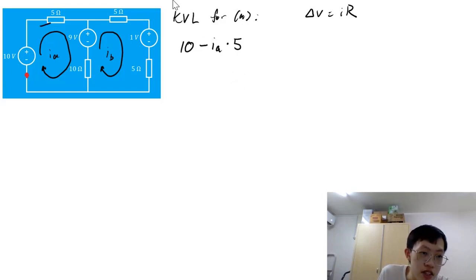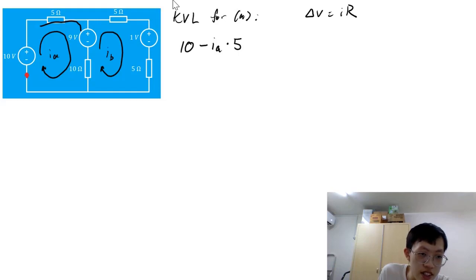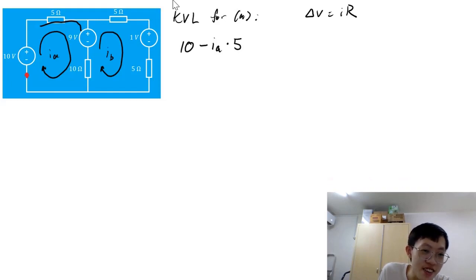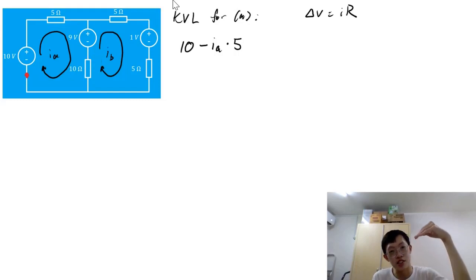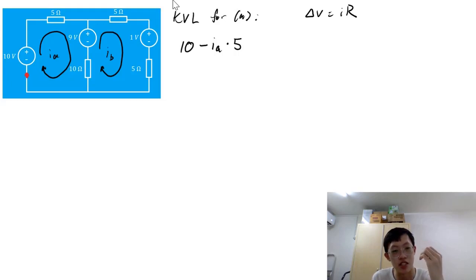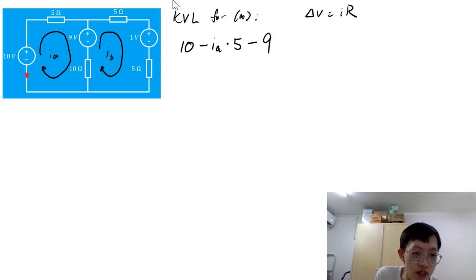After going through the resistor, we encounter a second voltage source. Still going in the clockwise direction, we're going from the positive to the negative terminal, which is a voltage drop. Since we assign a voltage drop as negative, it will be negative 9 volts.